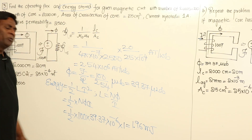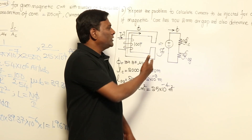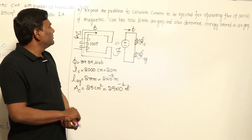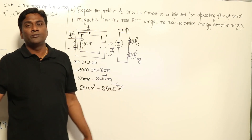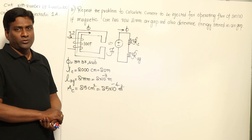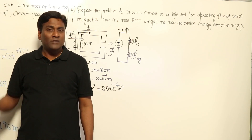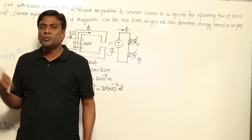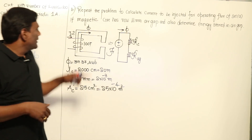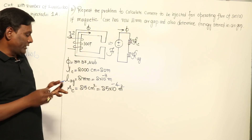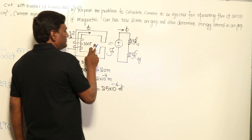How much is the air gap? It should be small — 2 mm. The problem is: calculate the current to be injected to maintain the same operating flux of 39.37 micro webers. If I keep a small air gap, how will my current vary? There will now be a reluctance of the core and a reluctance of the air gap.